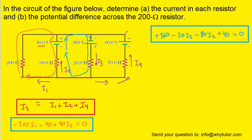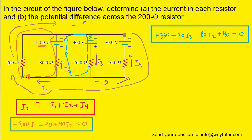For the final equation, we're going to do something a little different. We're going to start at this point, but instead of going around the rightmost loop, we're actually going to go around the entire circuit itself, which of course constitutes a loop — a rather large loop, but one nonetheless. Moving from positive to negative terminal is a negative potential change of 80 volts. Then moving with the current I4 is a negative potential change equal to 70 times I4. We're not encountering anything interesting until we hit this resistor where the current is I1, and we're moving with that current — so that's a negative potential change equal to 200 times I1. We go around the outside of the circuit and return to where we started, so we set this equal to zero. This is our fourth equation.